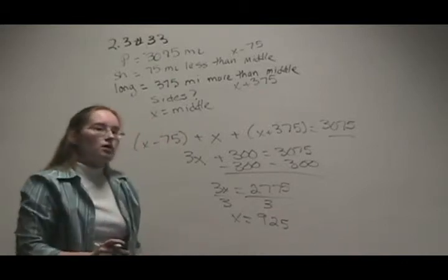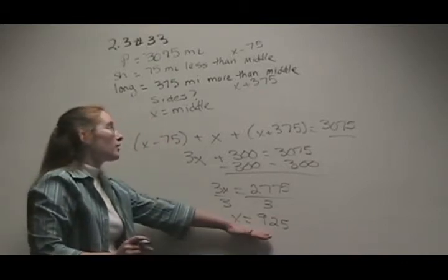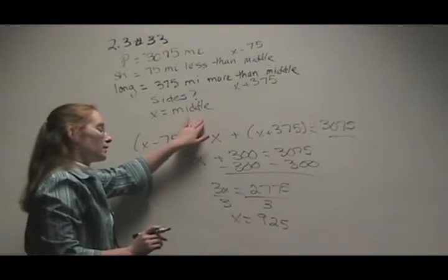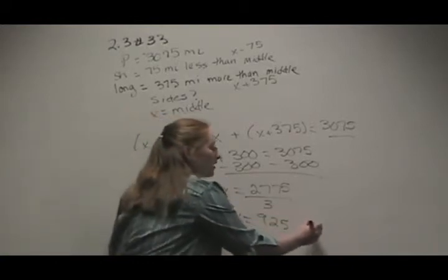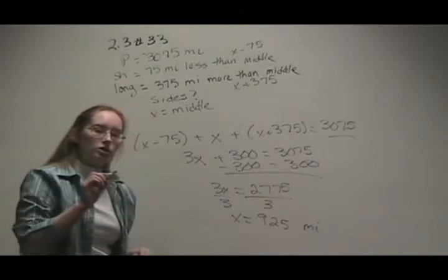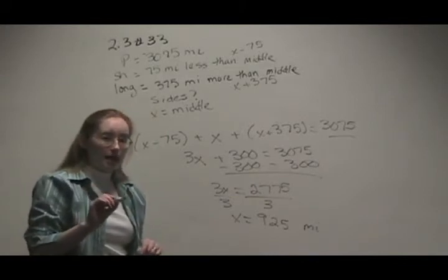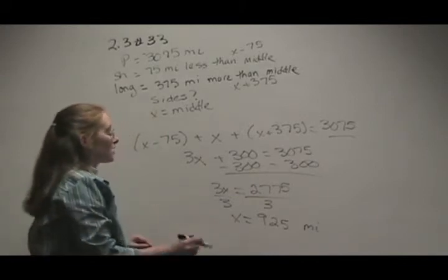Is this our final answer? No. So this is just the middle side, what we set x equal to. So the middle side is 925 miles, but the question asked us for all three sides, so we need to go back and find out the other two sides.